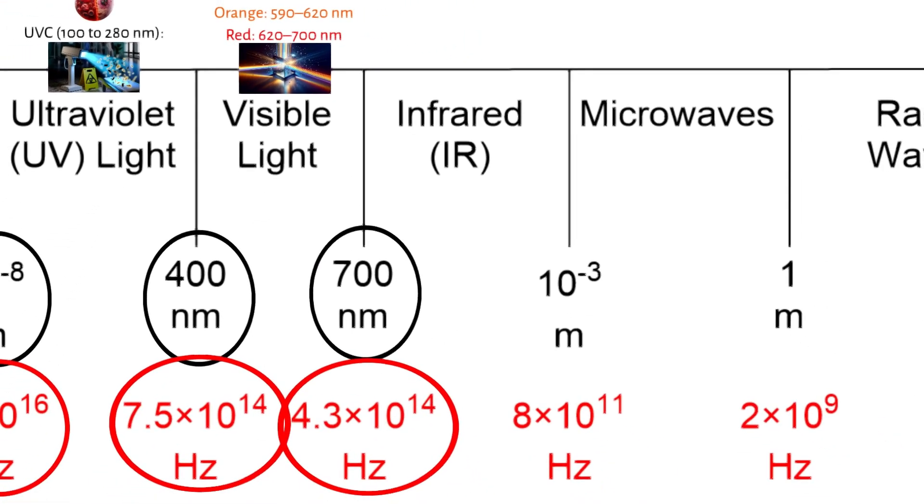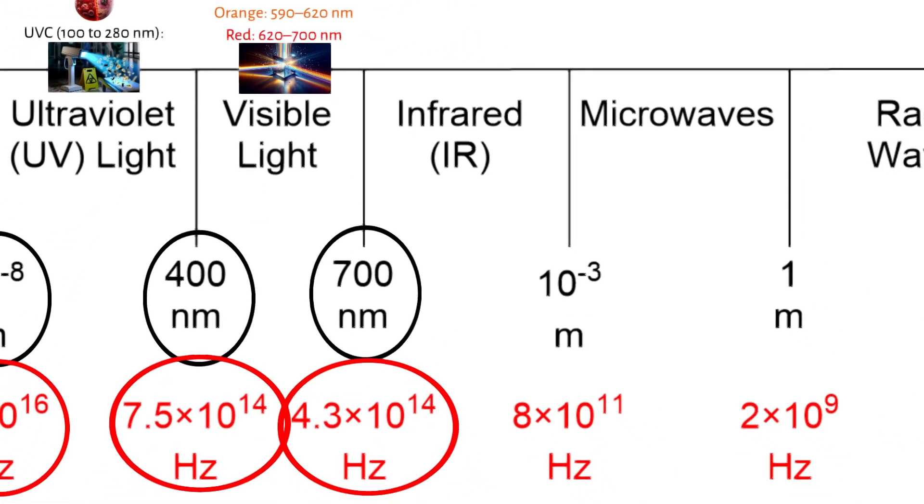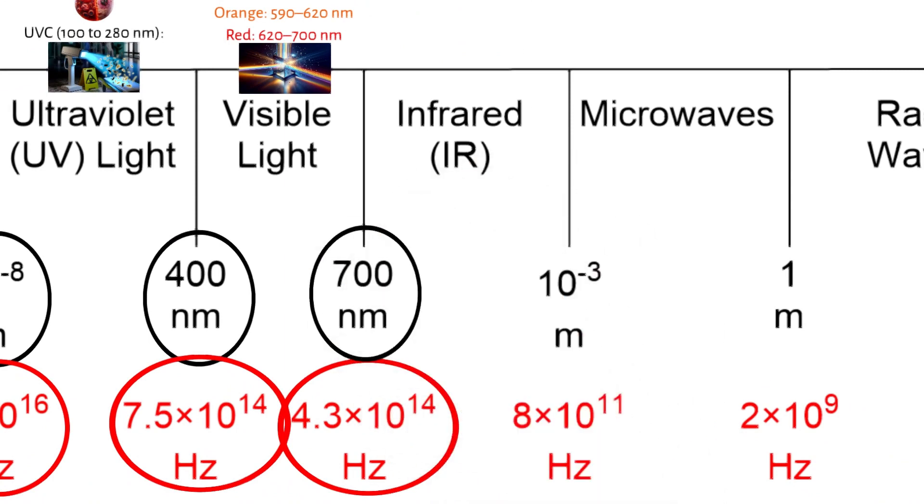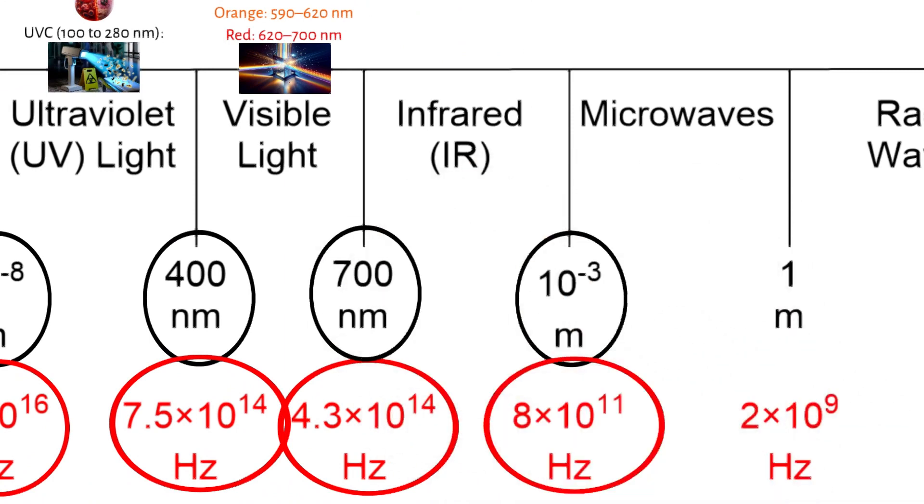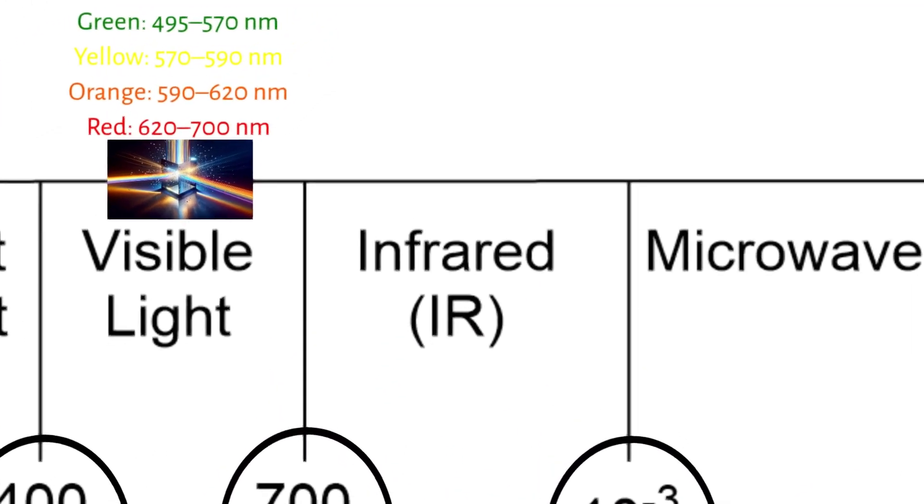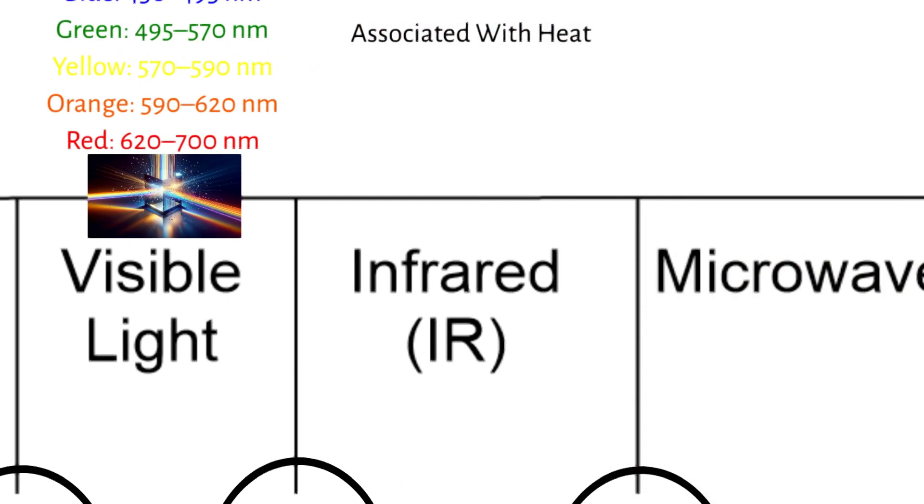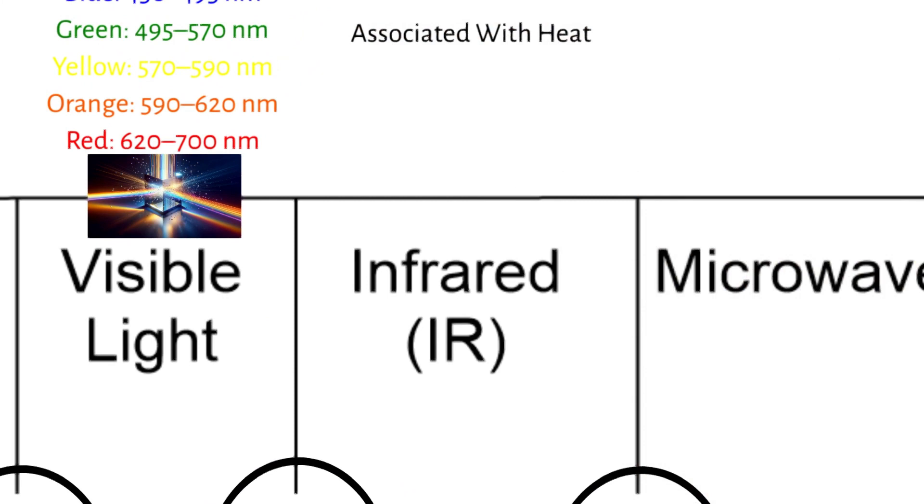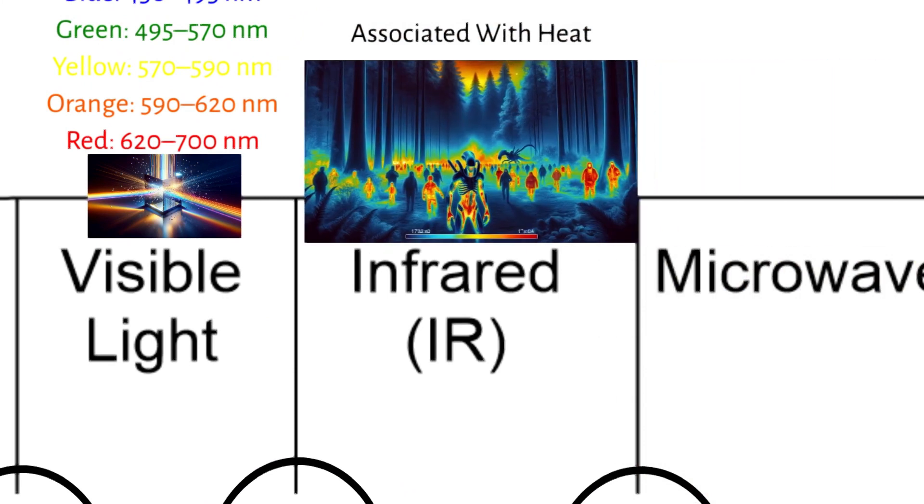Infrared IR radiation is next. Infrared wavelengths range from 700 nanometers to 1 millimeter, with frequencies between 8 times 10 to the 11th Hertz and 4.3 times 10 to the 14th Hertz. Infrared IR radiation is associated with heat and is used in various applications such as night vision equipment, remote controls, and thermal imaging.